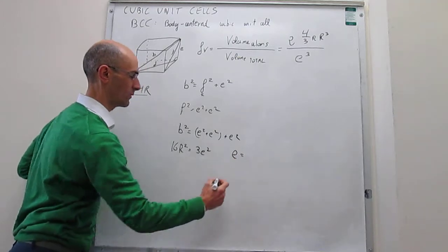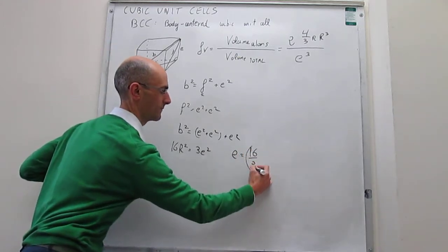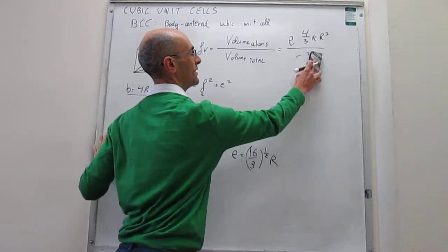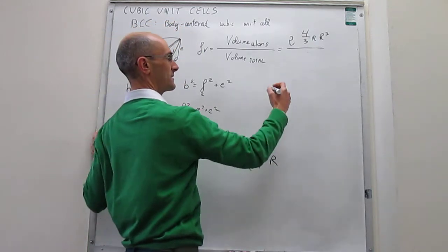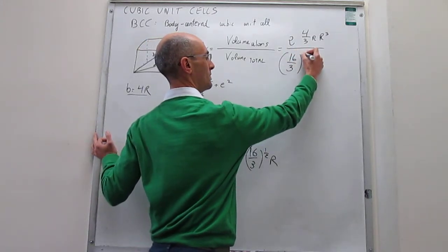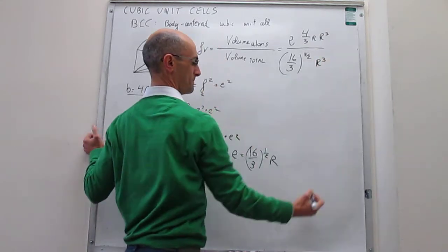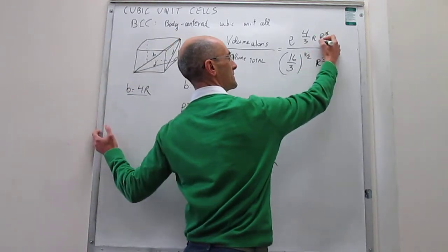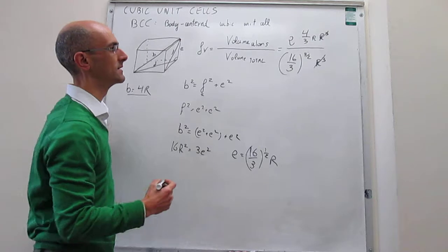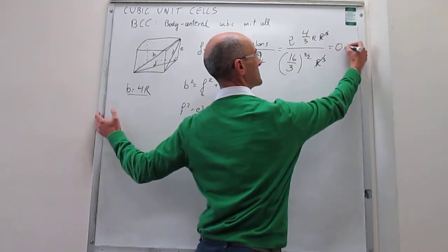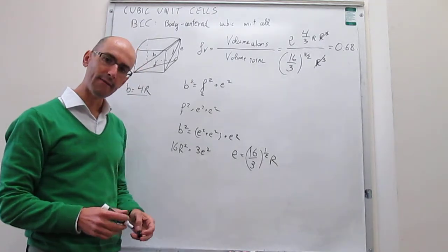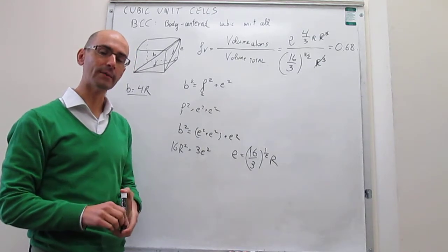From this we can calculate the total volume of the unit cell: E³ = (16/3)^(3/2) · R³. The R's cancel in the packing efficiency ratio, leaving just a number that we can easily calculate. The packing efficiency is 0.68, meaning 68% of the volume in a body-centered cubic unit cell is occupied by atoms.